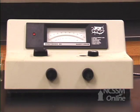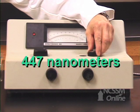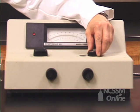We set the wavelength on the spectronic 20 to 447 nanometers. At this wavelength, the complex ion absorbs strongly, but the thiocyanate ion and the iron plus 3 ion do not.